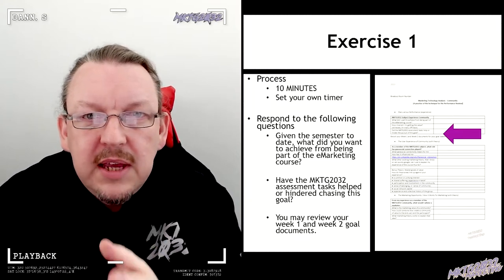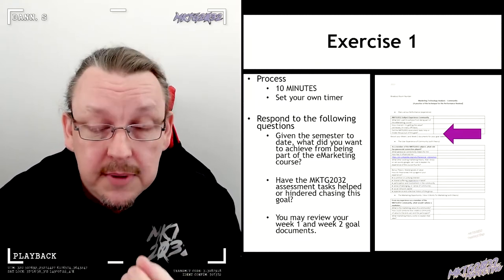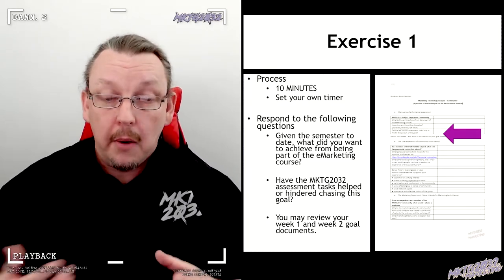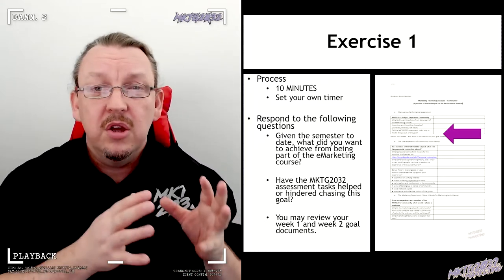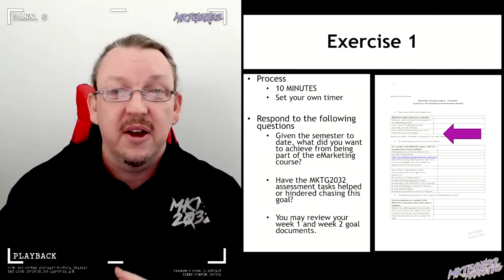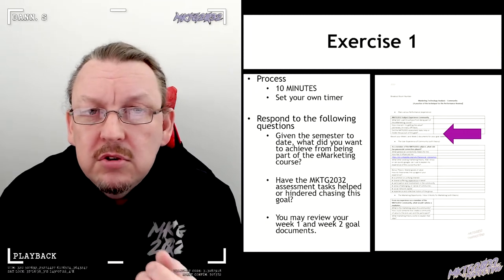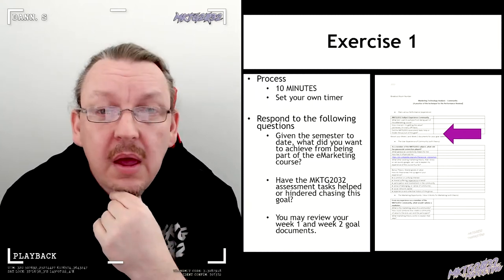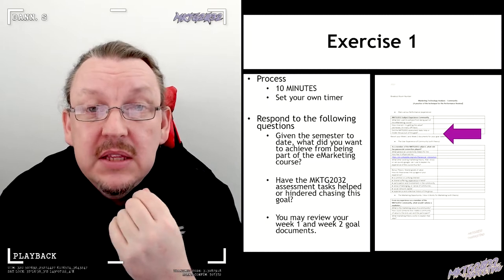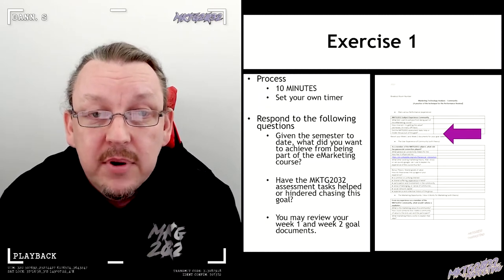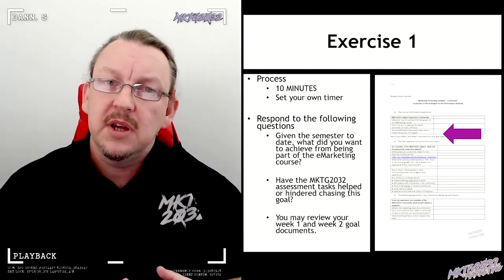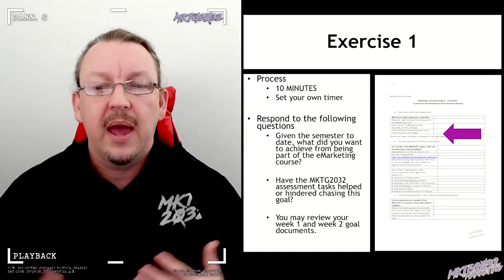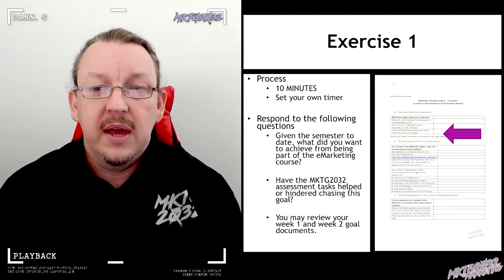First of all, we're bringing together a couple of retrospective elements. When you get into the e-taper — the technology performance review — you're going to need to look at how well you went: goals versus outcomes. Go back and have a look at those goals you set for yourself in the first couple of weeks. Did that happen, or is it in the process of happening? Have the assessment tasks helped you chase those goals? If you've submitted one, you're working on two, three is ongoing, and the fourth is looming on the horizon.